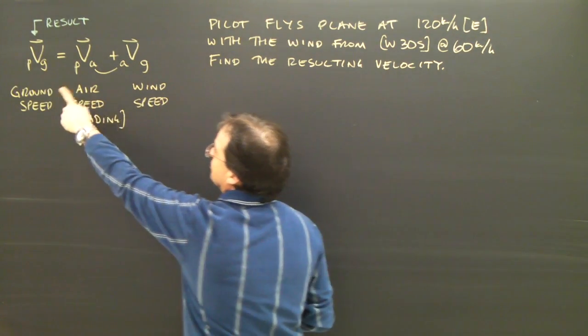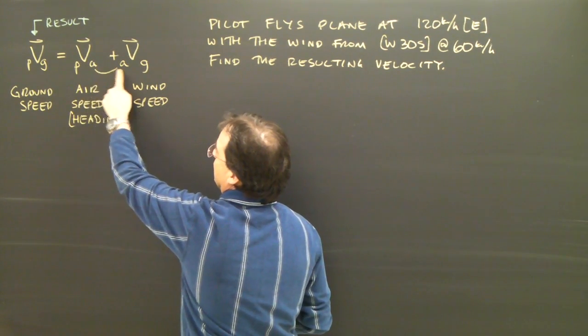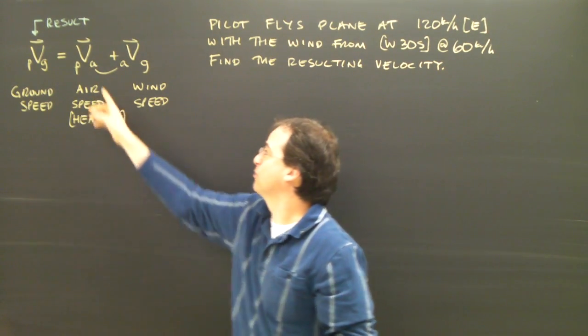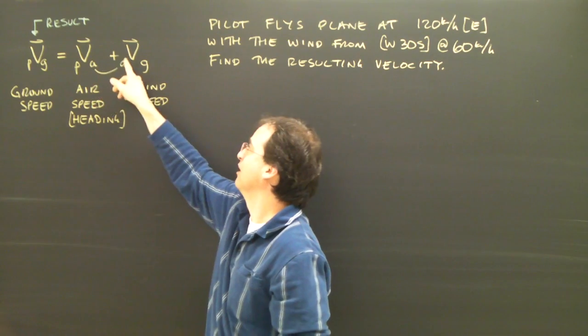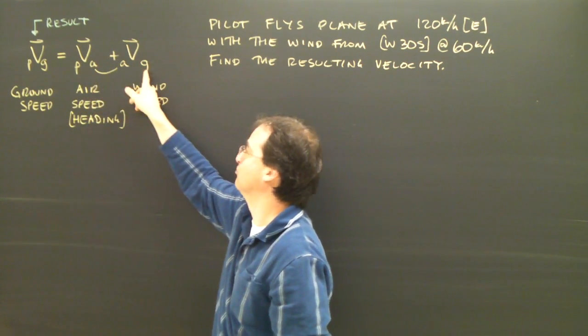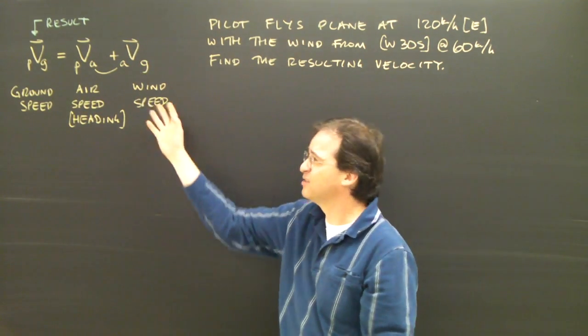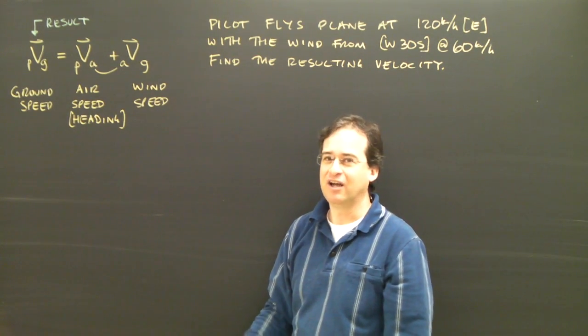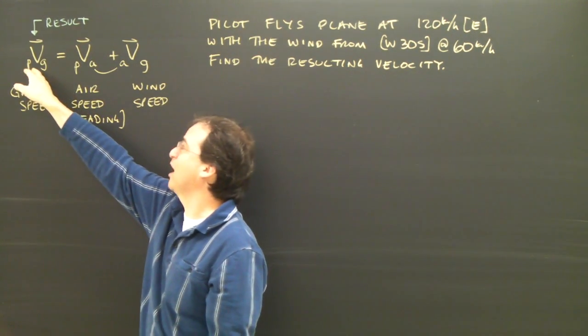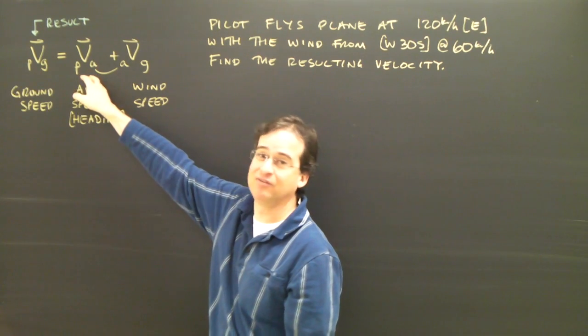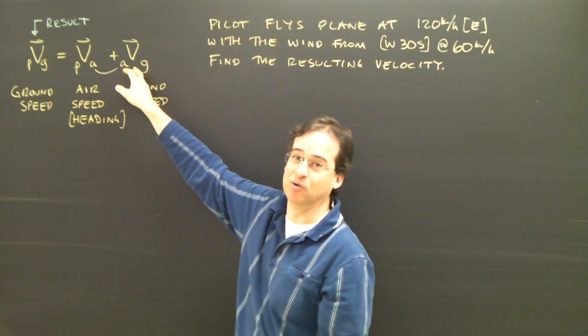And you'll notice in this sign convention, this and this match. So if you add up the plane relative to the air and the air relative to the ground, you end up with the plane relative to the ground. I find this notation a bit confusing. I'd rather think of it as whatever happens to the plane is the result of the plane flying and the air moving.